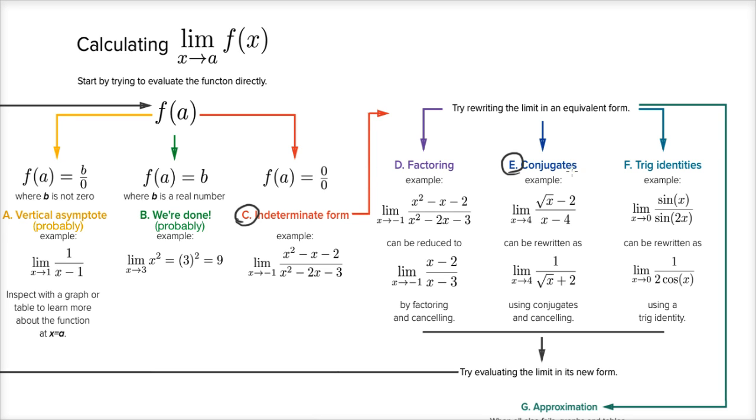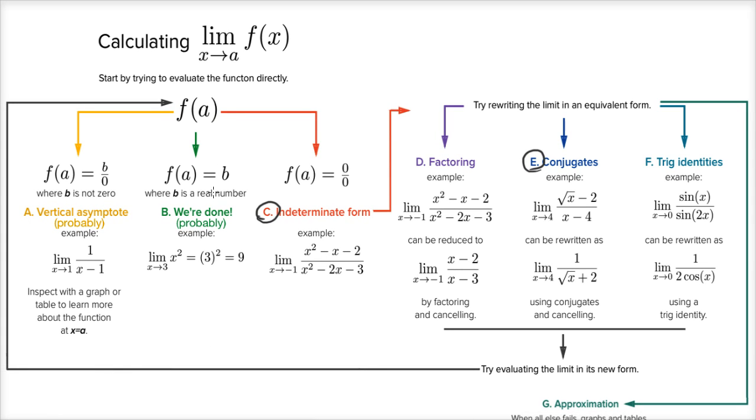We recognized that it was a radical, that it was a rational expression with a radical on top, and so we multiplied by the conjugate. We did that, and then after we were able to simplify it with the conjugate, we tried to evaluate it again, and we were able to get a real number. So we feel pretty good that that is going to be the limit.